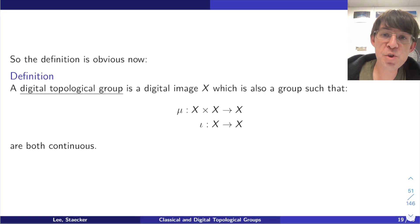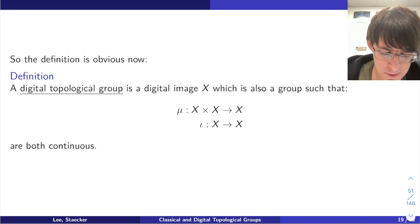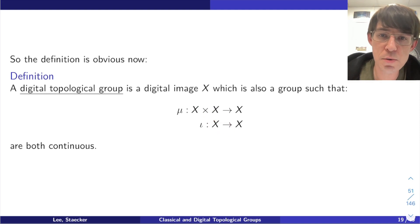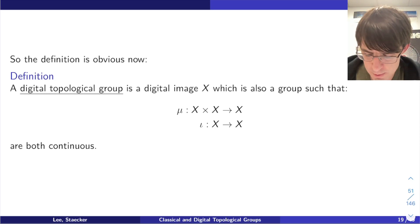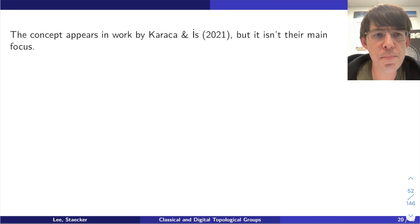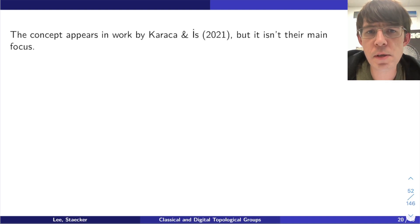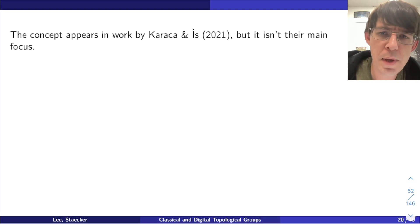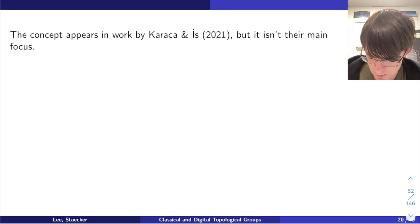So what's a digital topological group? Now that we have digital continuity, it's obvious what this should mean: a digital image which is also a group such that the multiplication and inversion functions are both digitally continuous — adjacent points map to equal or adjacent points. This concept appears in a paper by Karadja and Ege, although it's not really their focus; their paper is really about topological complexity and they used digital topological groups sort of as an example.